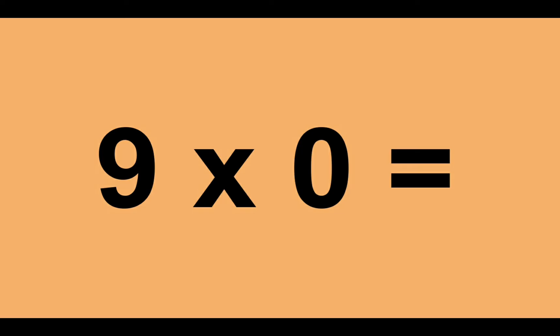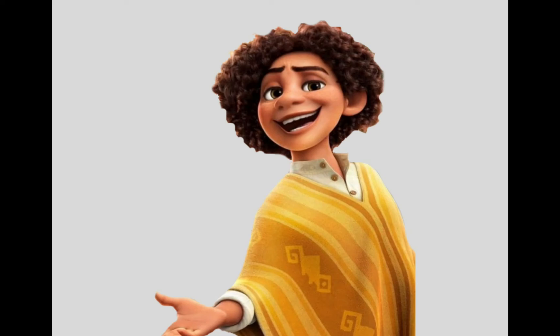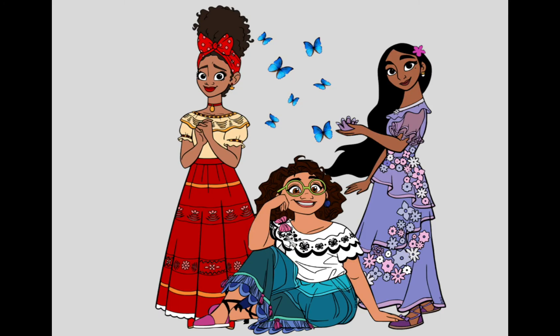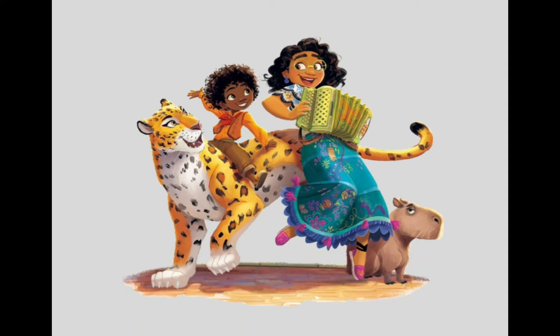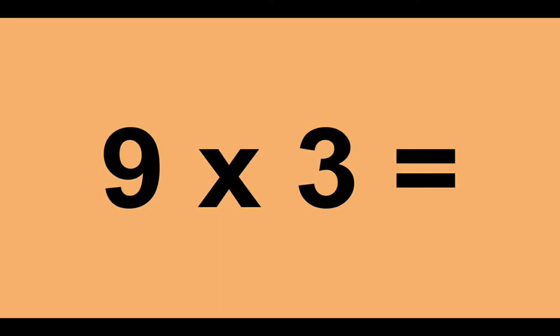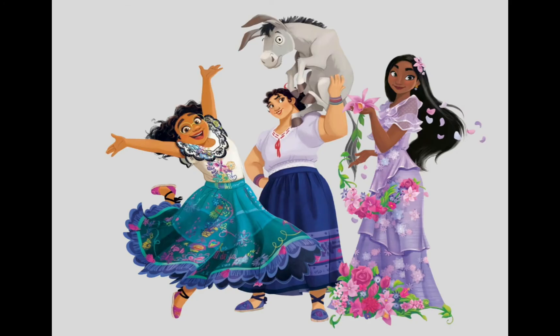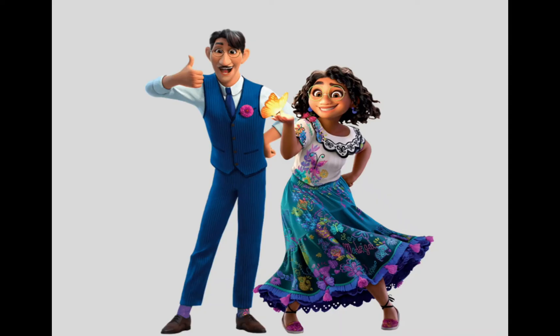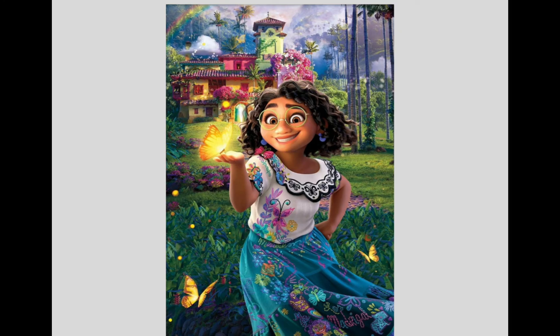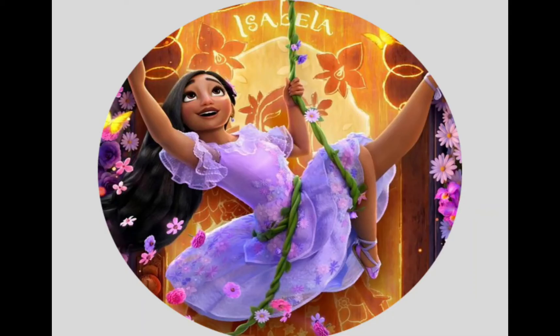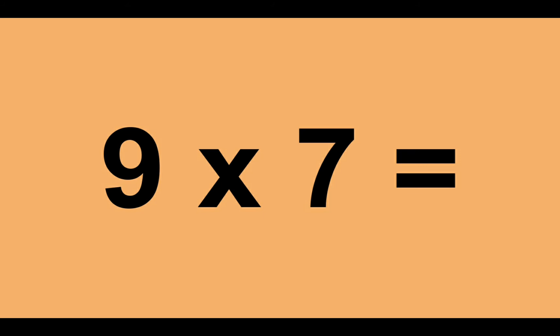9 times 0 equals 0. 9 times 1 equals 9. 9 times 2 equals 18. 9 times 3 equals 27. 9 times 4 equals 36. 9 times 5 equals 45. 9 times 6 equals 54. 9 times 7 equals 63.